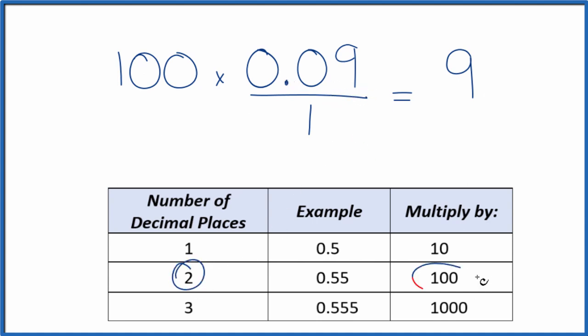But we can't just multiply the top by 100. We also have to multiply the bottom, the denominator, by 100, because 100 over 100 is just 1. So we haven't changed the actual value, just the way it's represented.